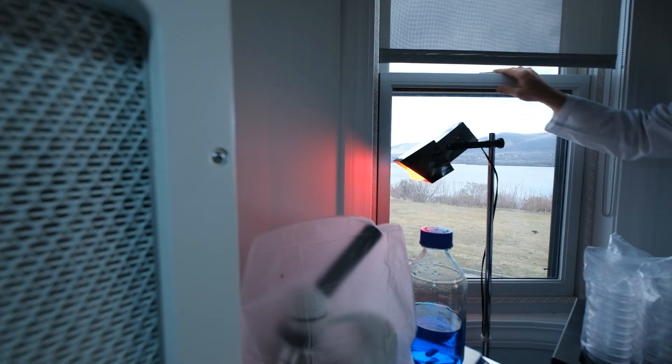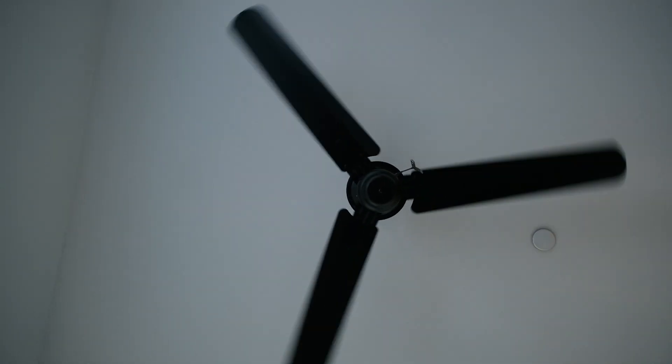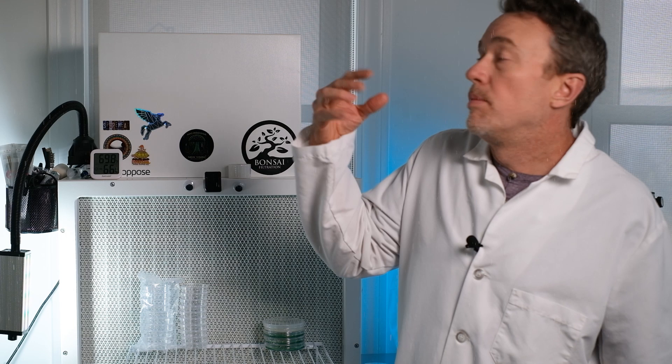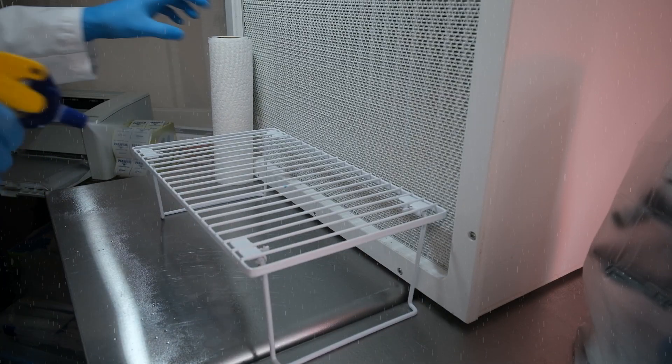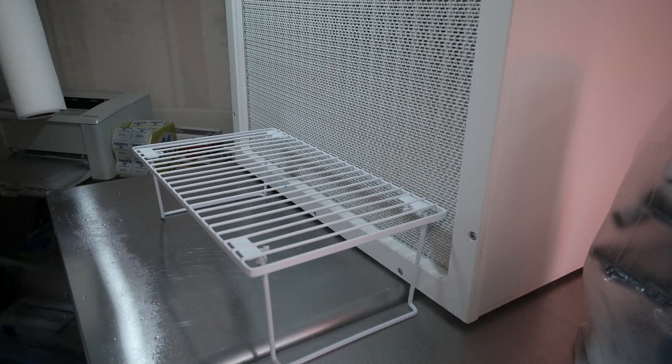Tip number two: close all your windows and turn off any circulating air in the room at least 30 minutes before you start. This gives all the airborne contaminants and particles that are floating around in the air time to settle onto the surfaces. Then you can spray them with 70% isopropyl and you can wipe them all off.